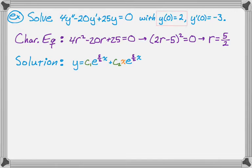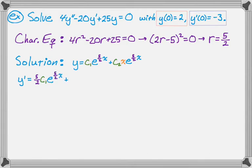We know that y of zero is two, and we can use the equation we just got to find something there. We're going to plug in zero for x and two for y. That's going to give us one equation with c₁ and c₂ as variables. We also know that y prime of zero is negative three, so to use that piece of information we're going to find y prime based on our general solution. So y prime is going to be — I need the derivative of c₁ e to the 5/2 x, so that's just a chain rule problem: 5/2 c₁ e to the 5/2 x plus — now this is actually a product, it's c₂ x times e to the 5/2 x.